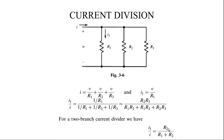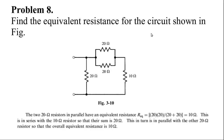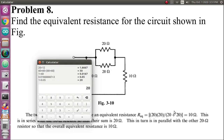For two resistors, you write the simplified form accordingly. Now let's solve a problem: find the equivalent resistance for the circuit shown in the figure. The circuit has both series and parallel combinations. First, looking at the circuit, 20 ohms and 20 ohms are in parallel. Parallel gives R_equivalent = (R1 × R2) / (R1 + R2) = (20 × 20) / (20 + 20) = 10 ohms.